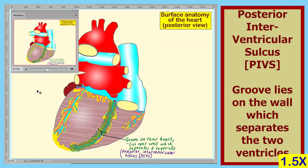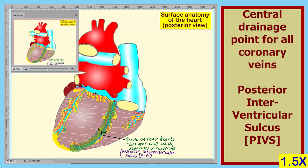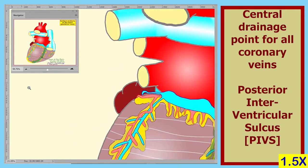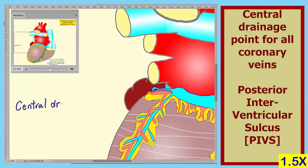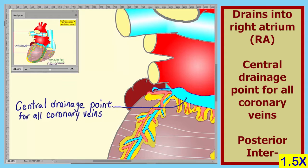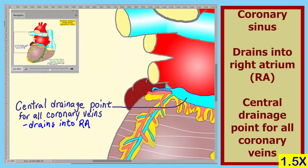The next structure that we'll identify is shown here. This structure is the central drainage point for all coronary veins. This structure drains into the right atrium. All coronary veins then drain into the right atrium. This structure is known as the coronary sinus.